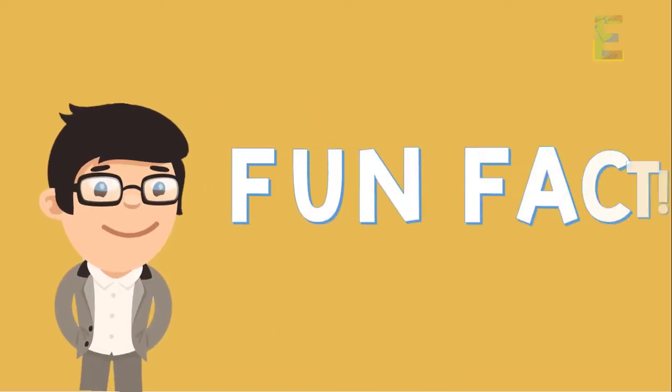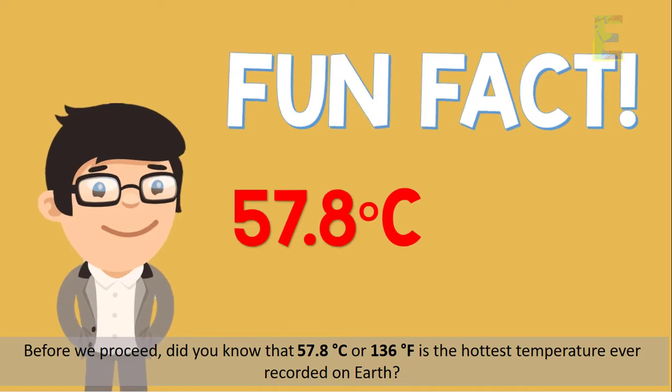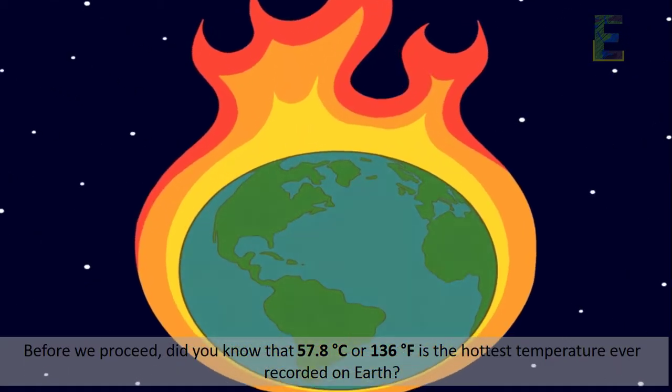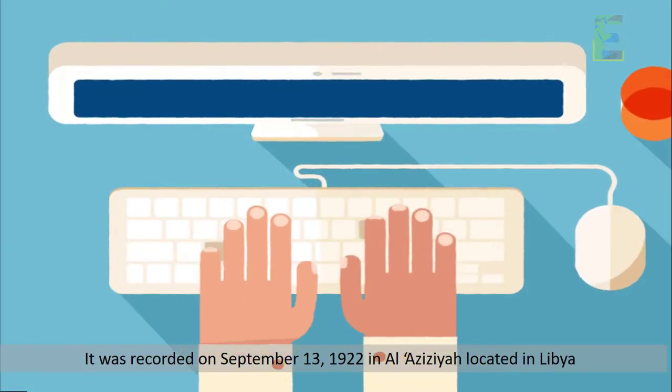Now let's have a fun fact. Before we proceed, did you know that 57.8 degrees Celsius or 136 degrees Fahrenheit is the hottest temperature ever recorded on Earth? It was recorded on September 13,